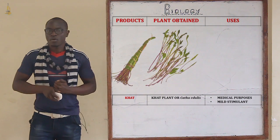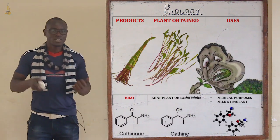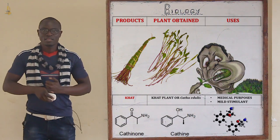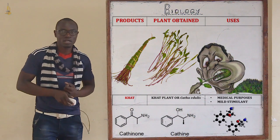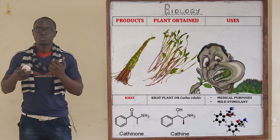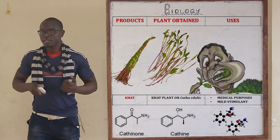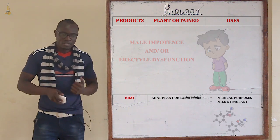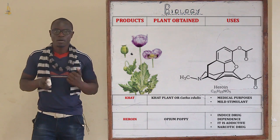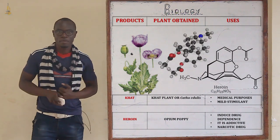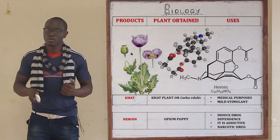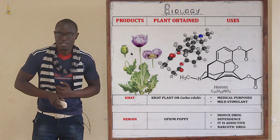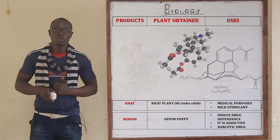Khat is obtained from the khat plant, with the scientific name Catha edulis. Its functions include acting as medicinal drugs that may be prescribed to patients, serving as a mild stimulant, and it also leads to impotence in males. Heroin is obtained from the opium plant, just like morphine. It induces drug dependence, is highly addictive, and is a narcotic drug.